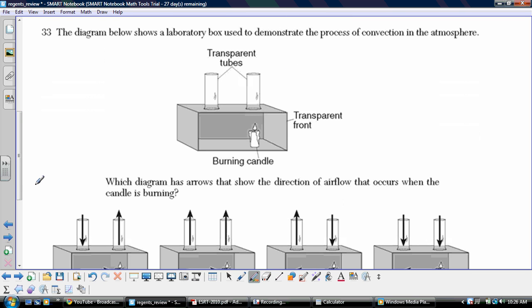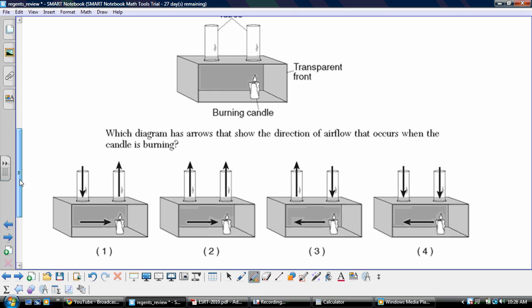Question 33, we've got a diagram below that shows a laboratory box used to demonstrate the process of convection in the atmosphere, and we've got a candle burning inside of it. Well, we know that the air is going to be warmed by the candle and should be moving upwards due to its lower density. You see number one and two both show that, whereas three and four, we've got these downward movement of air. So it's got to be either choice one or two. Well, we're looking for convection.